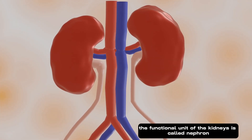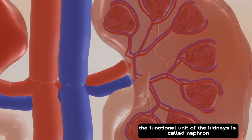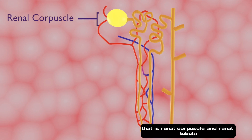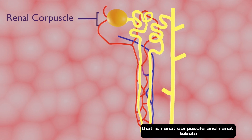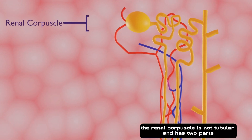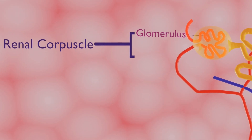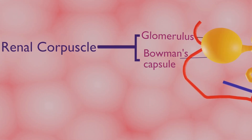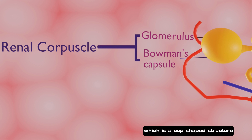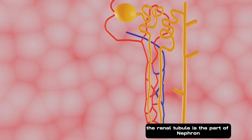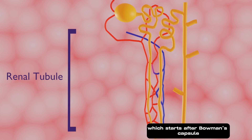The functional unit of the kidneys is called the nephron. There are two parts of a nephron: the renal corpuscle and the renal tubule. The renal corpuscle is not tubular and has two parts — the glomerulus, which is a network of capillaries, and the Bowman's capsule, which is a cup-shaped structure that encloses the glomerulus. The renal tubule is the part of the nephron which starts after the Bowman's capsule.